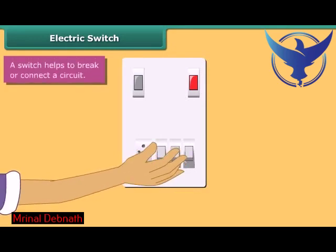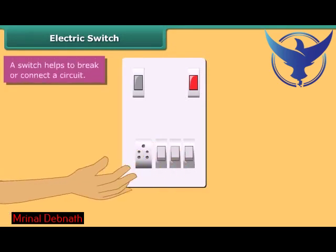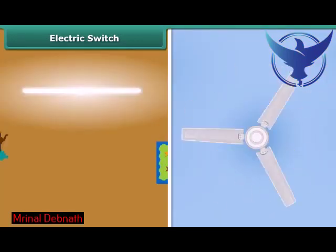We put a switch on or off whenever we want to use or not the electric appliance such as the fluorescent tube, fan, AC, etc.